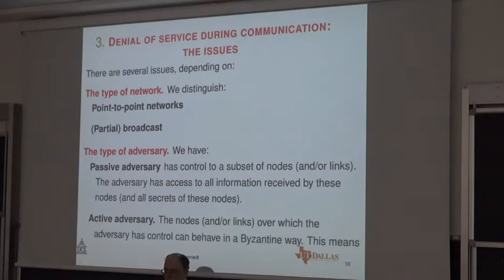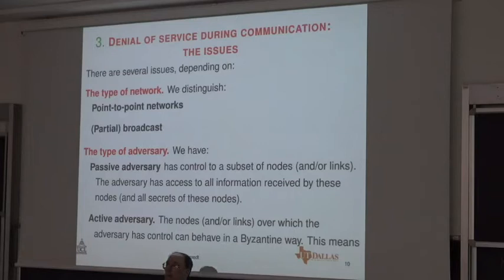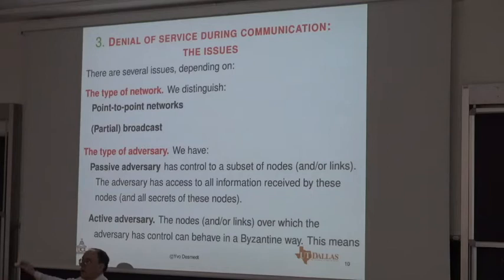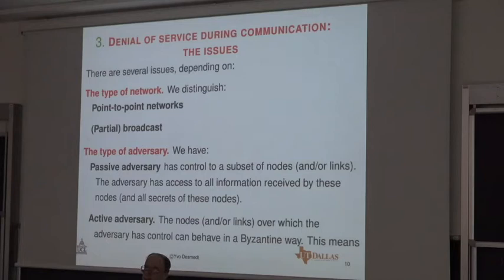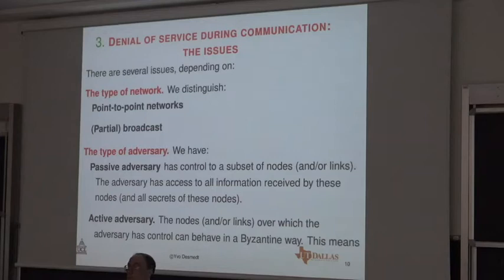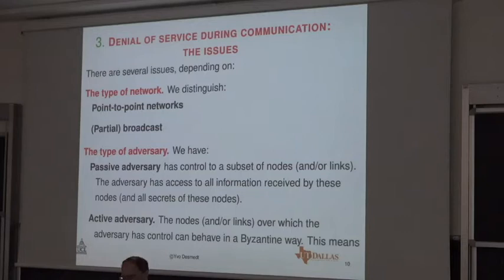There are many issues, and I'm going to talk specifically about denial of service during communication. We have two types of network: point-to-point and partial broadcast. The old-fashioned phone system was a point-to-point network, where you'd have a dedicated line going to a nearby node and then further on. But often we use what we call partial broadcast — full broadcast would be TV or old-fashioned radio, while partial broadcast is when you use a cellular network. Also, a lot of internet technology is actually partial broadcast based.